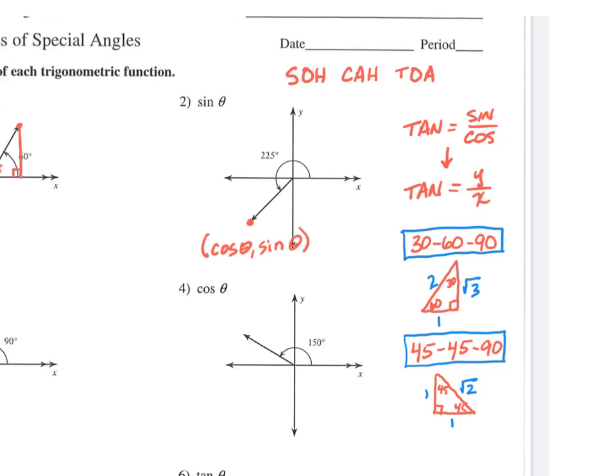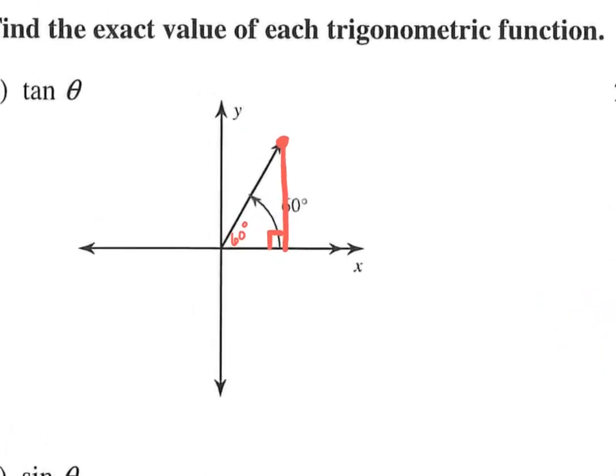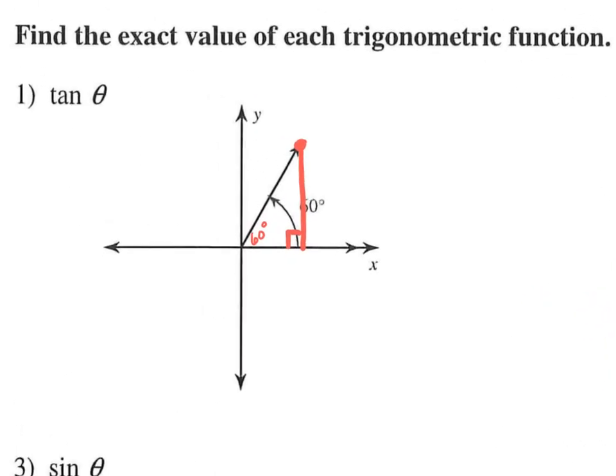So using that idea, let's go back to what we were working on. If I draw that, we have our short side is 1, our hypotenuse is 2, and our middle side is root 3. And that's how we always have it with our 30-60-90.